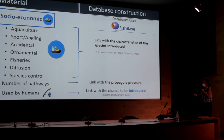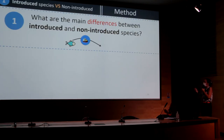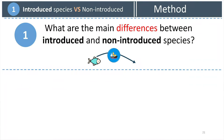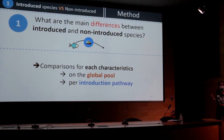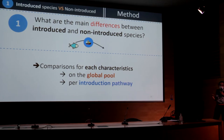Once we had our database, we began our analysis. First, using the introduction status in FishBase, we determined the main differences between introduced and non-introduced species. To do so, we compared each characteristic using all species globally and using each introduction pathway separately — for example, comparing all species introduced through the aquaculture pathway with all species not introduced through the aquaculture pathway.